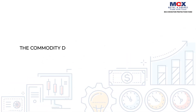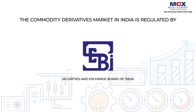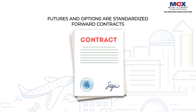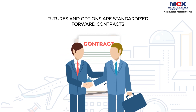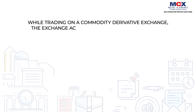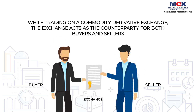The commodity derivatives market in India is regulated by the Securities and Exchange Board of India (SEBI). Futures and options are standardized forward contracts that have an expiry date and are traded on regulated exchanges like MCX. While trading on a commodity derivative exchange, the exchange acts as the counterparty for both buyers and sellers — a buyer to every seller and a seller to every buyer — which is known as Novation.